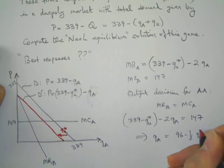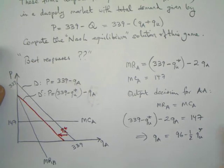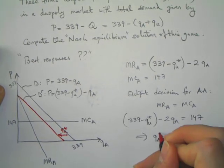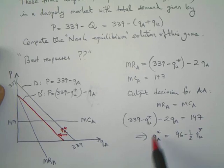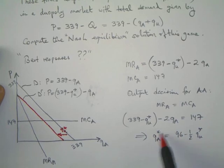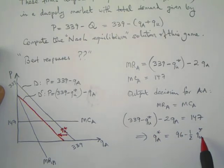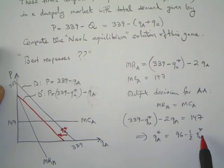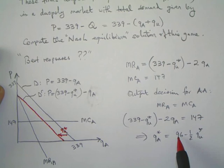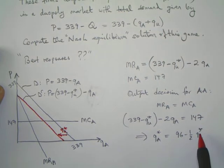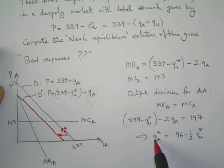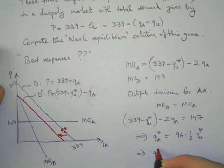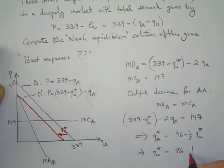Solving for QA, we realize that QA is equal to 96 minus one half QU star. We will call this the optimal decision of American Airlines, and that's why I add the star to it. Given my rival's choice of QU, this is how much I will produce. If my rival chooses to produce nothing, then for me the best is to produce 96.